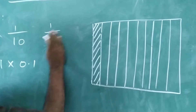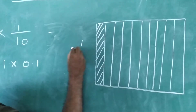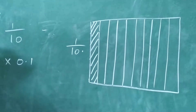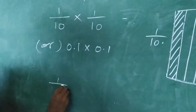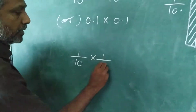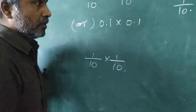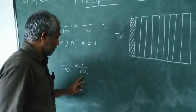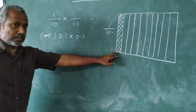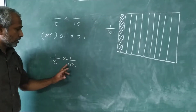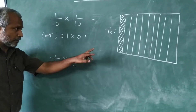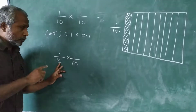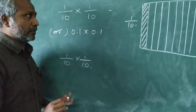This is 1 by 10. Next, we need 1 by 10 of 1 by 10. This is 1 by 10. Now, that 1 by 10 part, again, you have to split into 10 equal parts.